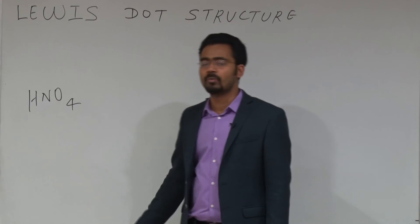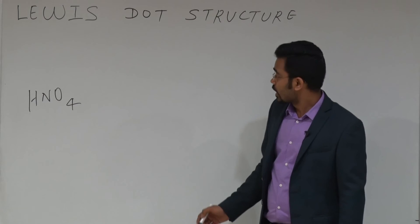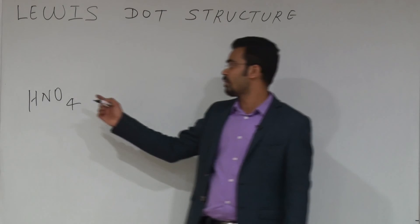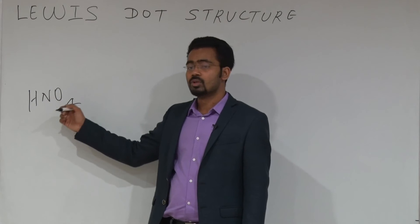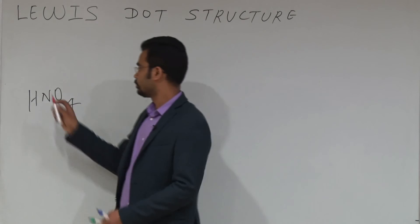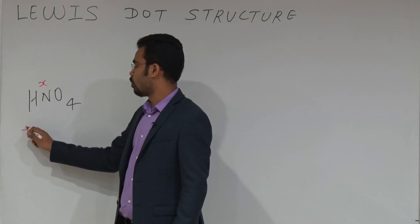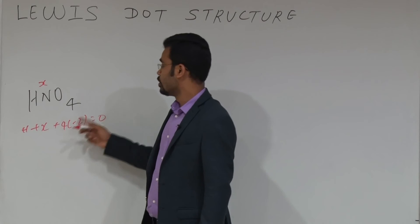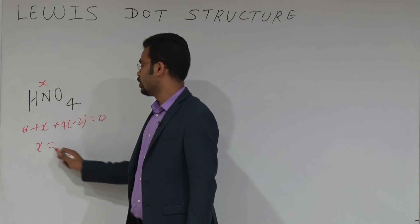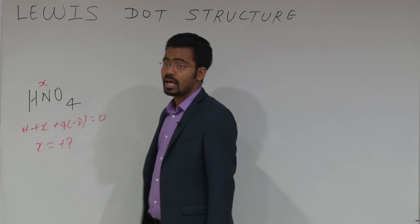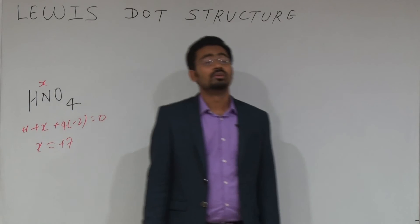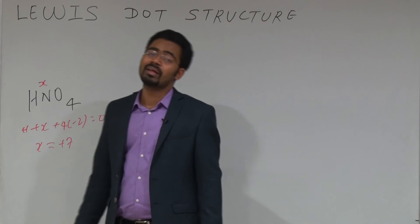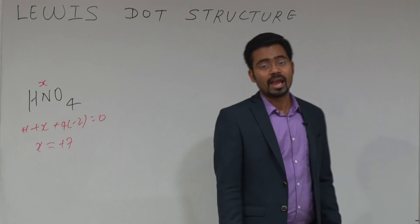How do you draw the structure of HNO4? One technique: first calculate the oxidation number of nitrogen. If you calculate it — H is +1, N is X, and 4 oxygens each at -2 — so +1 + X + 4(-2) = 0, giving X = +7. But nitrogen has only 5 valence electrons, so an oxidation state of +7 is not possible. This means the given compound has a peroxide linkage — there is an oxygen-oxygen bond.